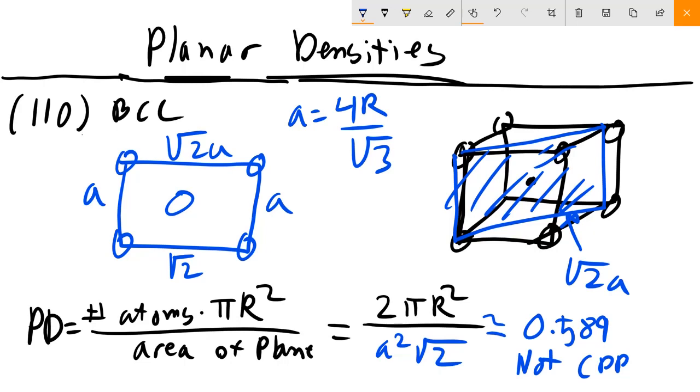Because remember, our magic number right up here at the top, 0.9069. Now, even though this isn't a close packed plane, in BCC, and actually in any material, we are still interested in the closest packed plane in a structure. So for BCC, the 110 plane is the closest packed plane.